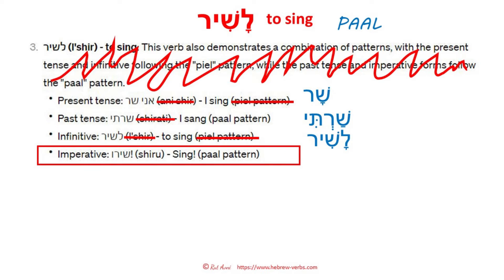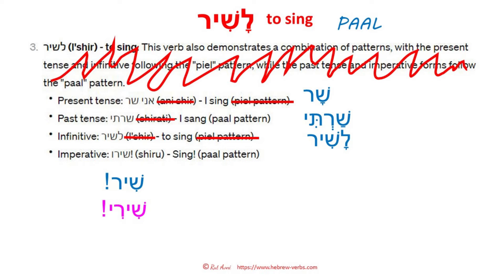Imperative: shiru — sing, paal, yes that's correct. But as I said before, either you put the male version consistently across all verbs or you say what it is. This here is the plural imperative. Otherwise it would be shir, shiri, and then shiru — but shiru is not the first you would mention. At least the imperative was not wrong, but it should have gotten an explanation.